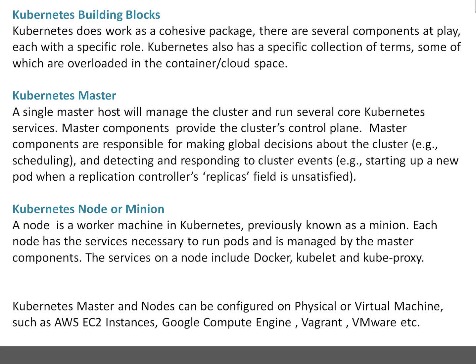The services on the node include Docker, kubelet, and kubeproxy. Kubernetes can work with different container solutions, but we will stick with Docker, which is the default. Kubernetes master and nodes can be configured on physical, virtual, or even a hybrid setup — for example, physical master with virtual machine nodes. I prefer to maintain a similar setup: if you are on Amazon Cloud, use Amazon Cloud for master and nodes; if Google Cloud, use Google Cloud; if VMware, go with that setup.